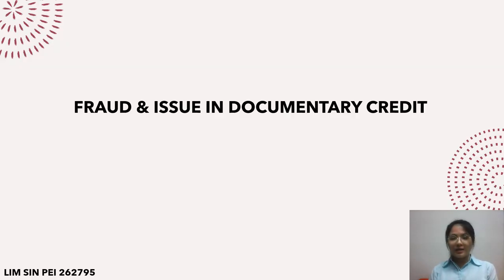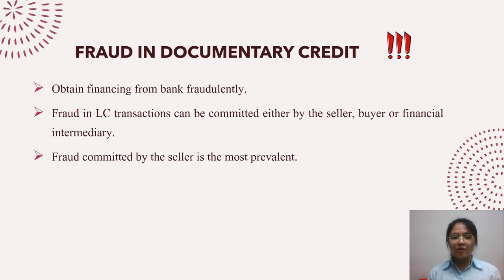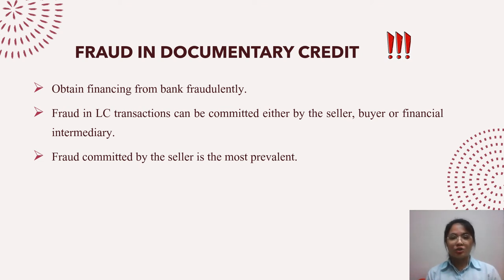My name is Elim Singh Pei, metric number 262795. I will continue to present Fraud and Issues in Documentary Credit. Fraud in Documentary Credit frequently happens to obtain financing from banks fraudulently, and can be committed either by a seller, buyer, or any financial intermediary. Fraud committed by the seller is said to be the most prevalent and leaves devastating effects on the buyer.